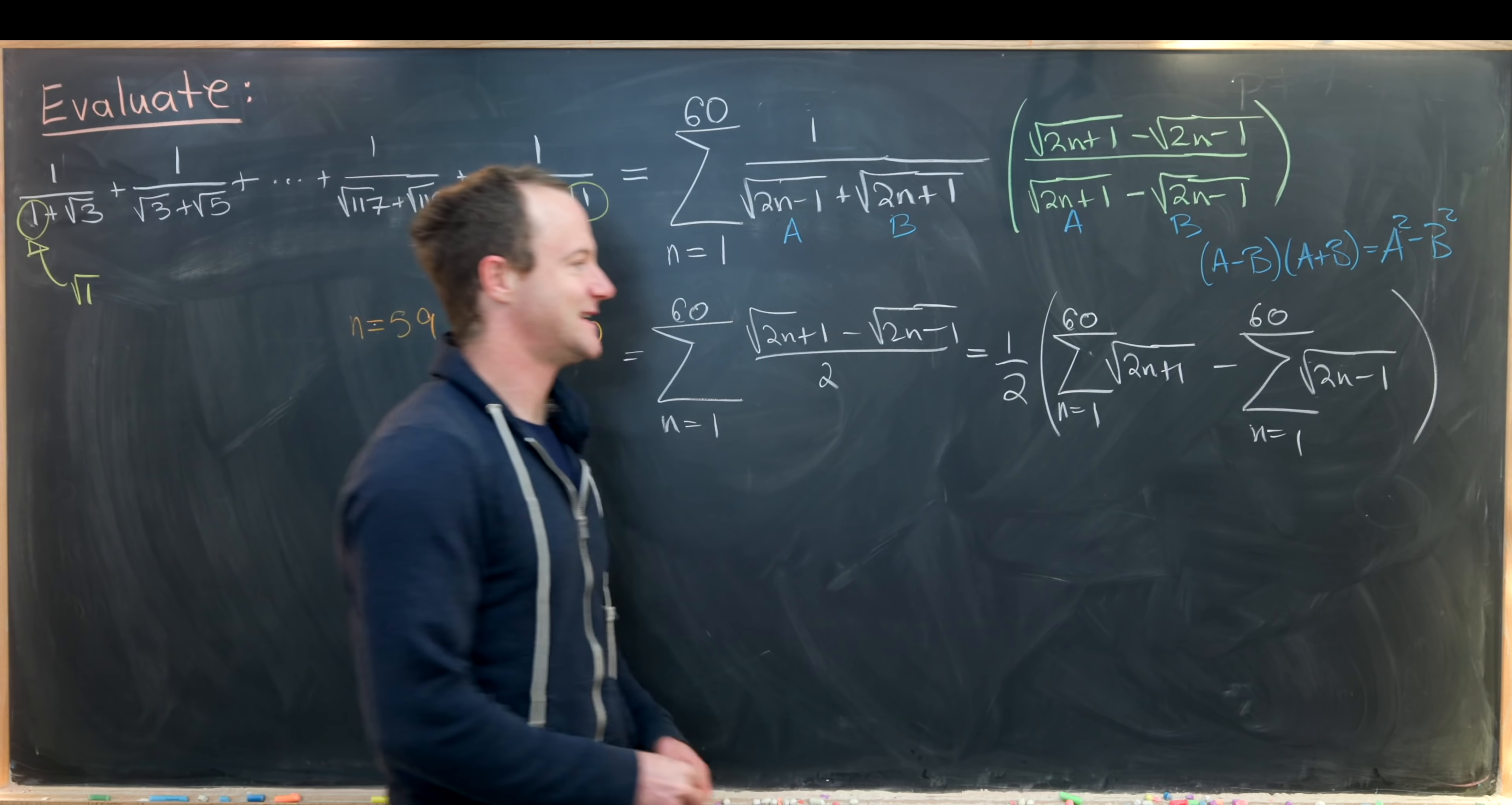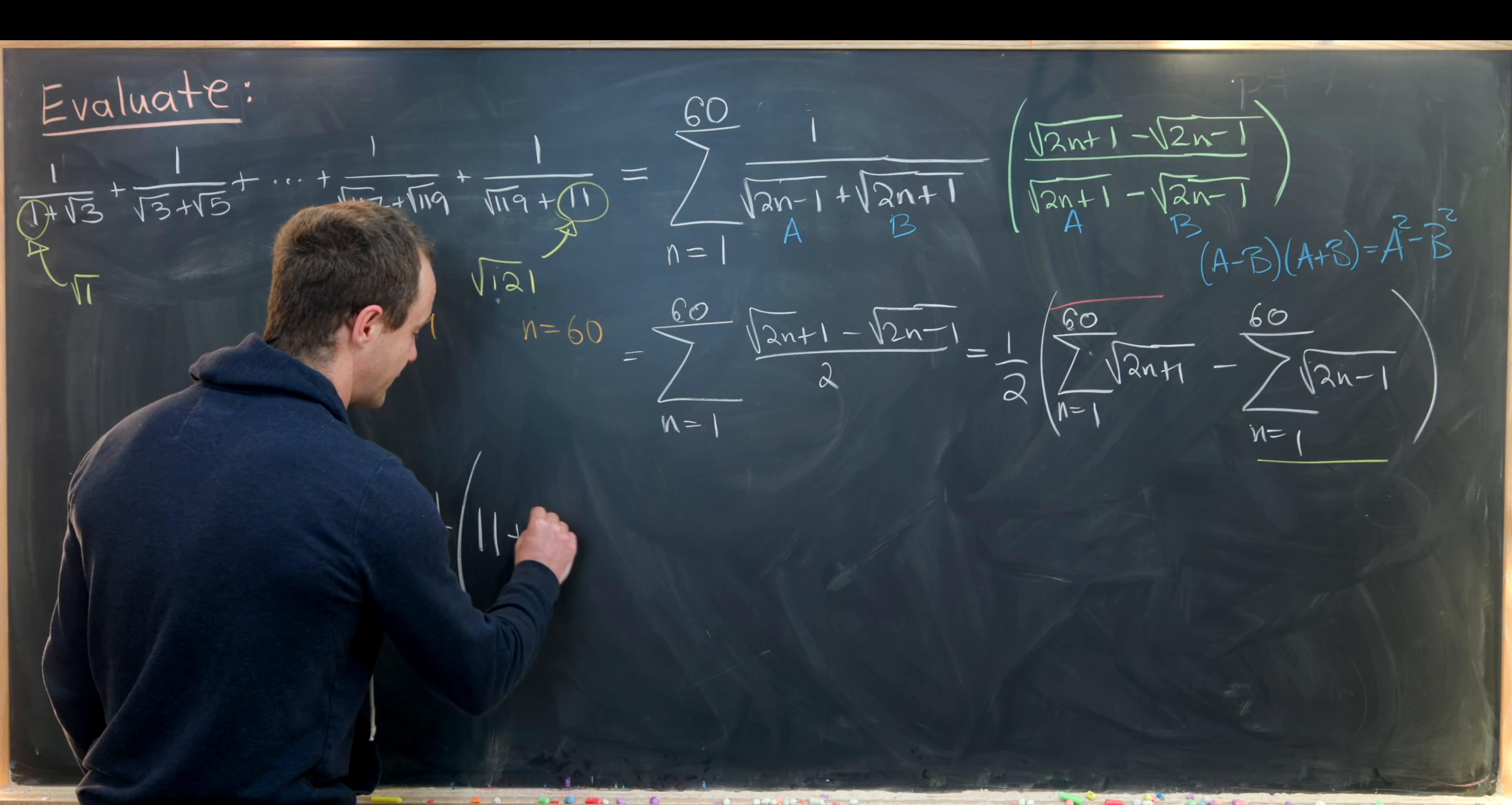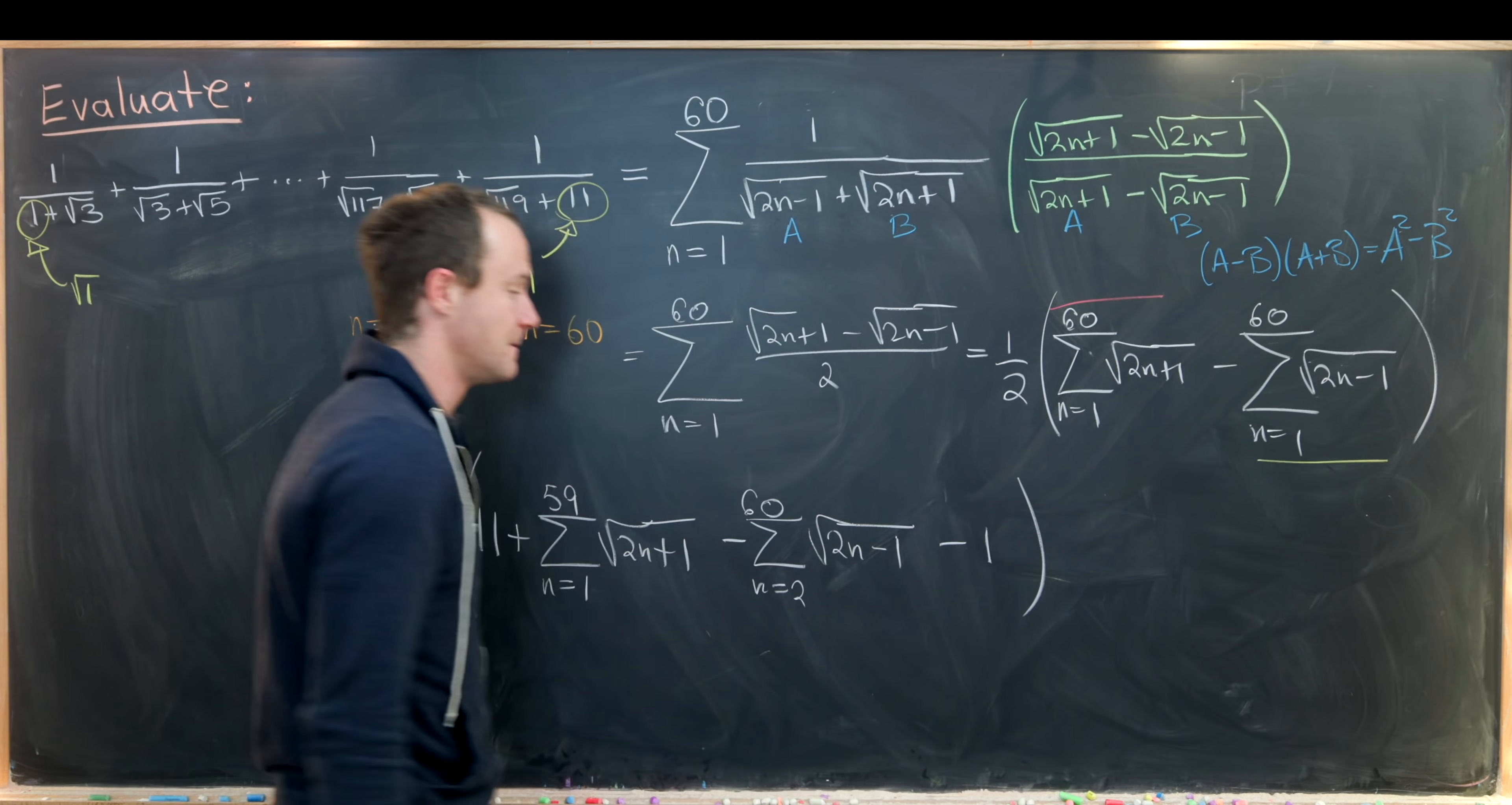Next up I'm going to take the n equals 1 term out of this first sum and the n equals 60 term out of this second sum. That'll allow me to re-index these back into each other. We'll have a half, and then the n equals 60 term will be the square root of 121 or 11, and then we're left with plus this sum as n goes from 1 up to 59 of the square root of 2n plus 1 minus the sum as n goes from 2 up to 60 of the square root of 2n minus 1, and then minus the n equals 1 term which is just 1.